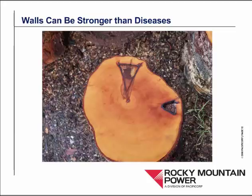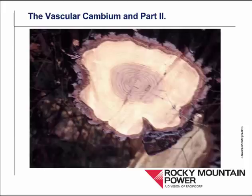There are times when compartmentalization is very strong — the tree is strong and the diseases are weak, so disease can be compartmentalized to an inconsequential degree inside the tree. On the other hand, there are times when diseases are strong and the tree is weak, and in these cases a complete hollow might develop in the core of the tree — all the wood being decay and lost to wood-rotting organisms.